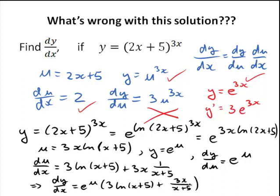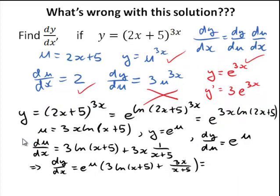And of course, in the last step, I need to replace u by 3x ln of x plus 5. So, what I would get is e to the power of 3x ln of x plus 5 times 3 ln of x plus 5 plus 3x over x plus 5.